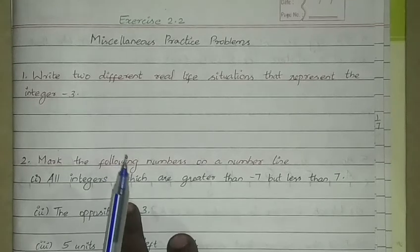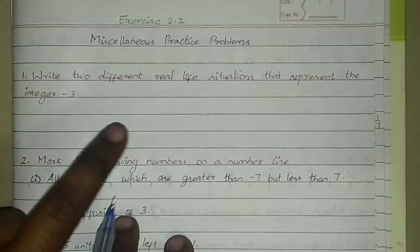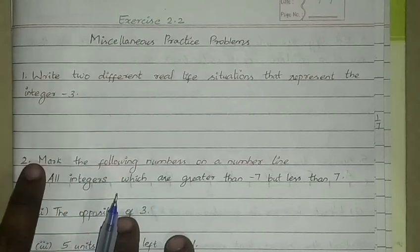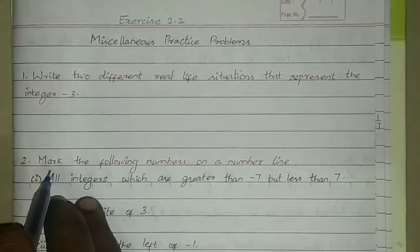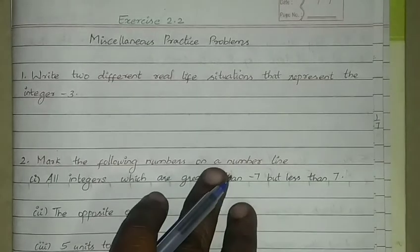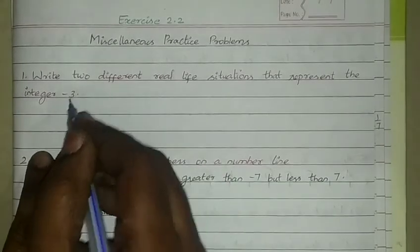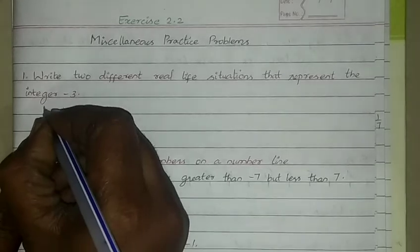Exercise 2.2, Miscellaneous Practice Problems. The first question is: Write two different real life situations that represent an integer minus 3. So we need two real life situations that represent minus 3. One example could be temperature.